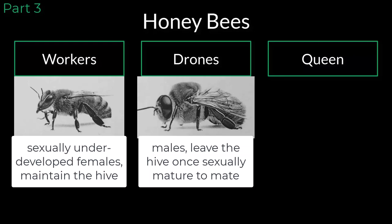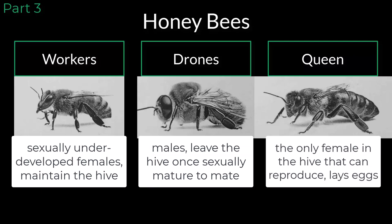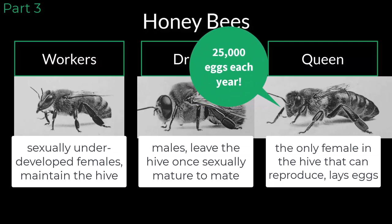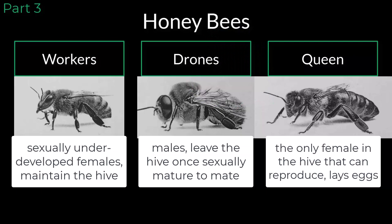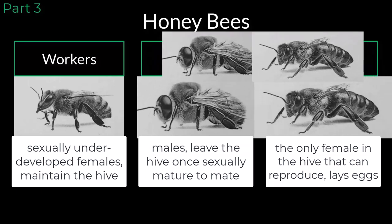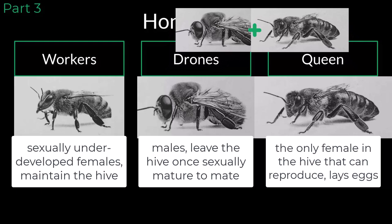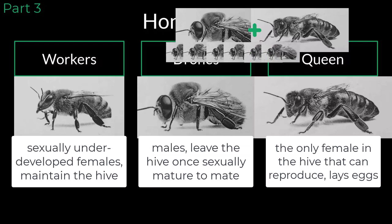Each hive has only one queen bee at a time. The queen bee is the only female in the hive capable of reproduction. The role of the queen bee is to lay eggs and keep the hive populated with worker bees and drones. Queen bees lay most of their eggs in the spring and summer and are capable of laying up to 25,000 eggs each year. Queen bees are typically able to produce offspring for two or three years. About a week after birth, the queen bee starts leaving the hive to mate with male drones from other hives.